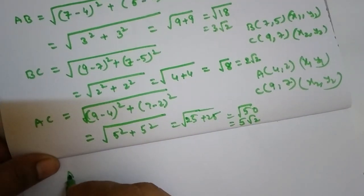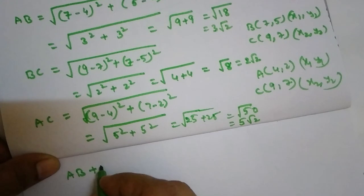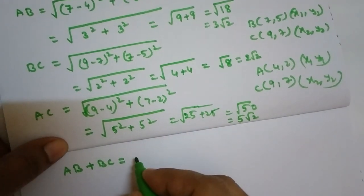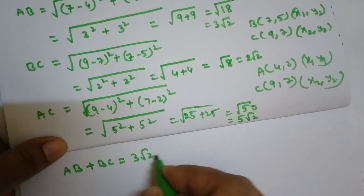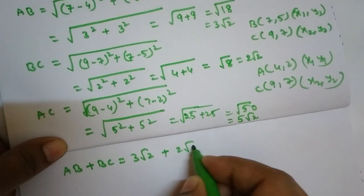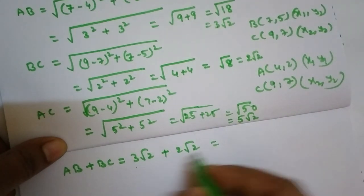Now AB plus BC equals AB 3 root 2 plus BC 2 root 2, equals 3 plus 2, which is 5 root 2, equals AC.